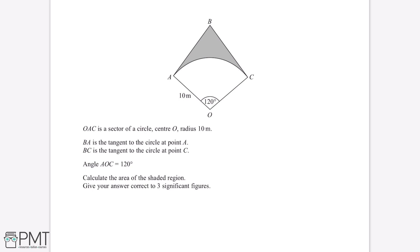The first thing we need to know is that tangents to a circle are always at a right angle to the radius of the circle. Because both BA and BC are tangents, this means that angle BAO and angle BCO are both right angles. We can mark this onto our diagram.